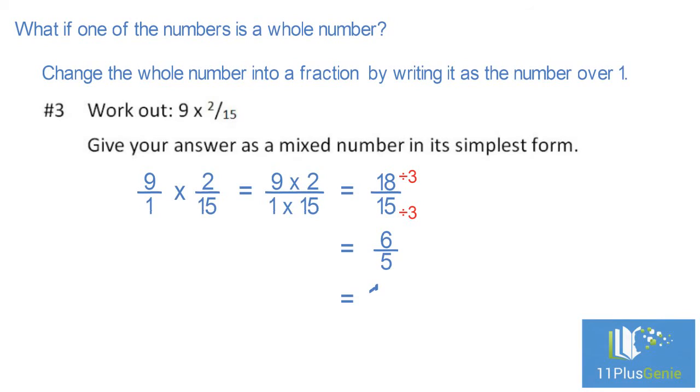Fives into six is one with a remainder of one. This remainder forms the numerator of the fraction, so our final answer is one and one-fifth.